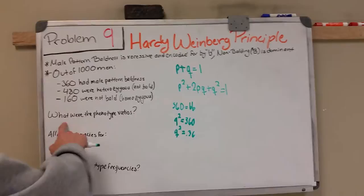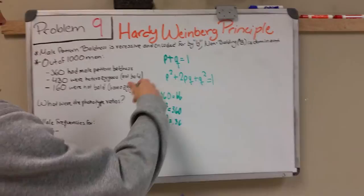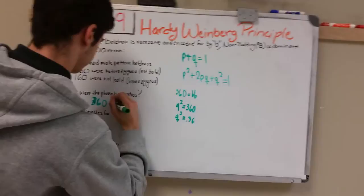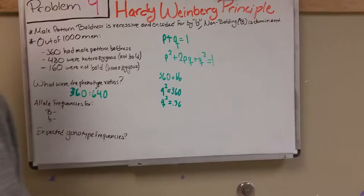We're looking for the phenotype ratios, so we're looking for the ratios of non-bald to bald. Non-bald is 640 because it is dominant, to bald which is 360. So you have 360 to 640 that had the dominant allele for it so they have no baldness at all looking at them.